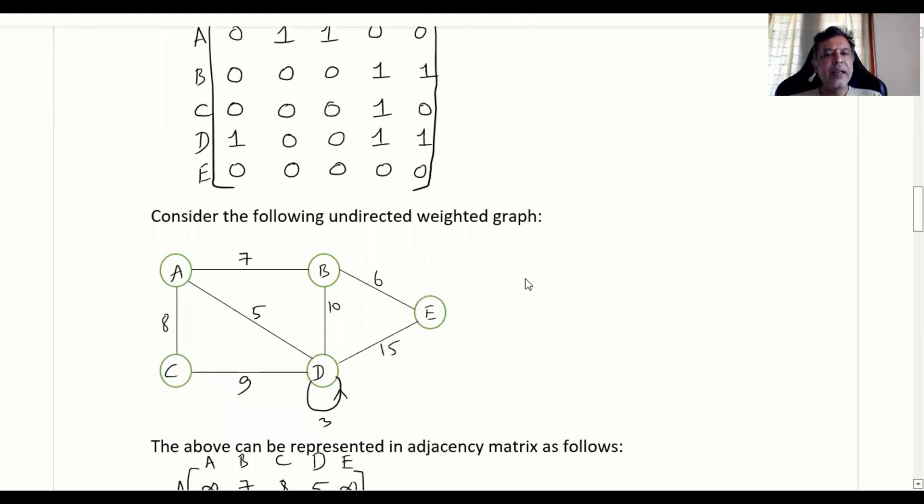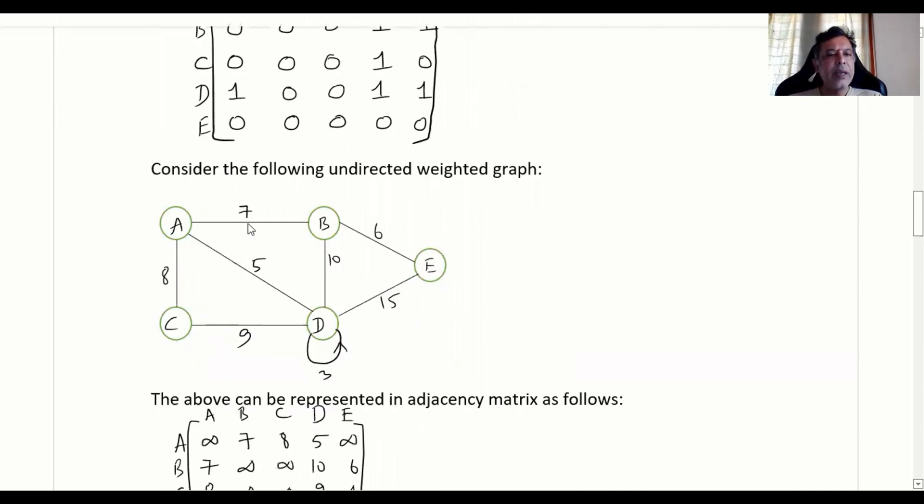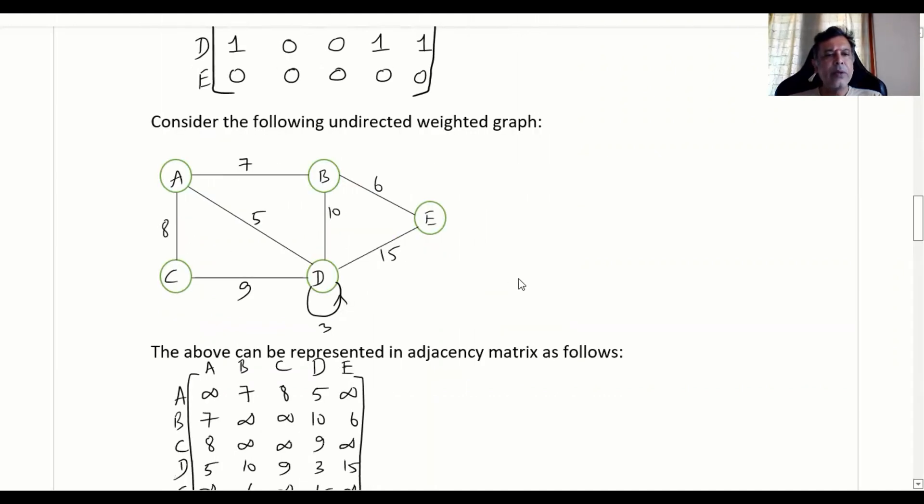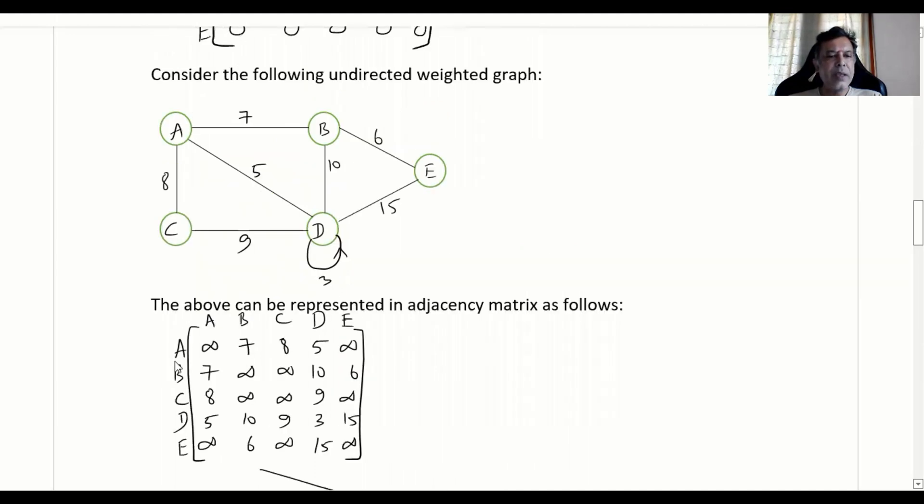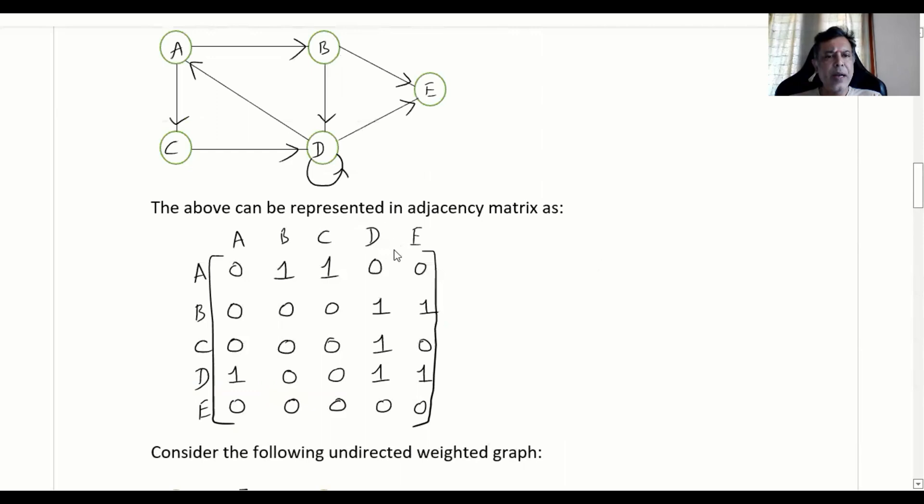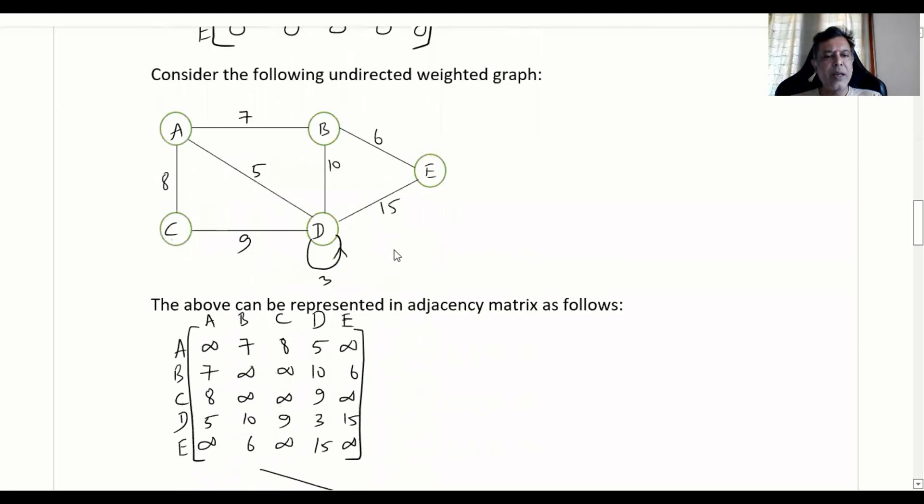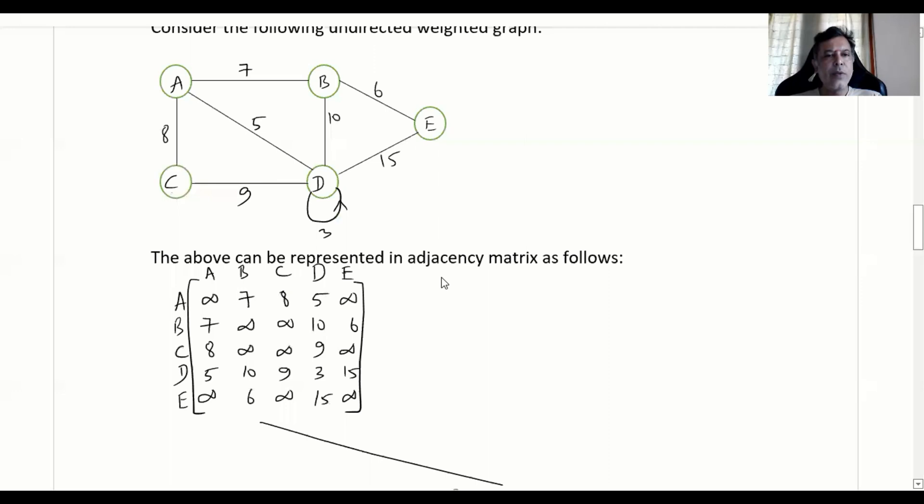Now let us consider a weighted graph which is undirected. Here weights are specified. Maybe this is a distance from A to B or distance from A to D like that. So wherever the distance is known, that distance will be specified here. It will be like a square matrix, you have A, B, C, D, E. Even the previous are also square matrix because you are filling up here also vertices, here also vertices. If there is no route specified from A to A, so it is infinity.